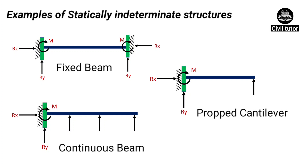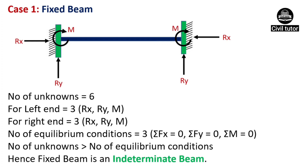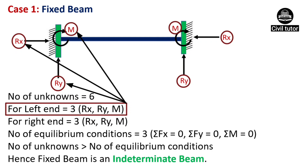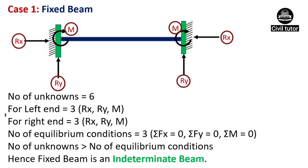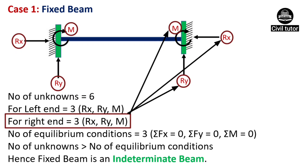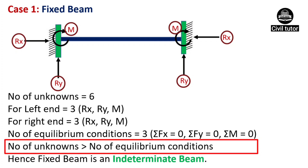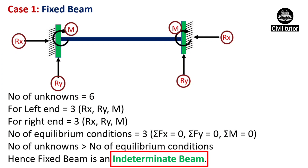Examples of statically indeterminate structures include fixed beams, continuous beams, and proper cantilevers. For a fixed beam, it will have six unknowns — three reactions at the left-end support (Rx, Ry, and M) and three at the right-end support. The number of equilibrium conditions is three. So the number of unknowns for fixed beams is greater than the number of equilibrium conditions — hence, fixed beam is an indeterminate beam.